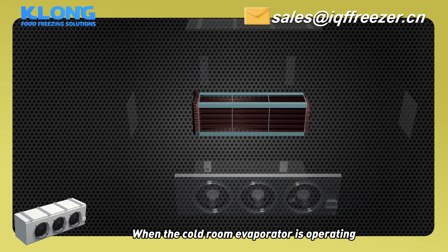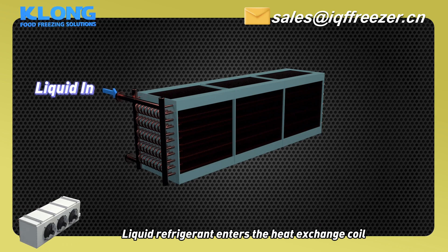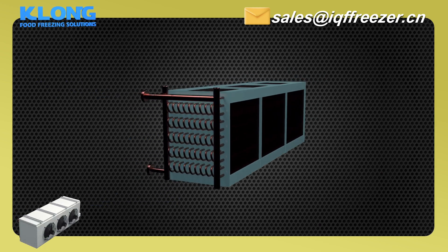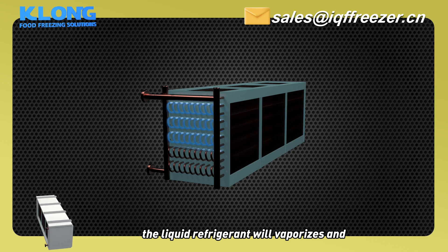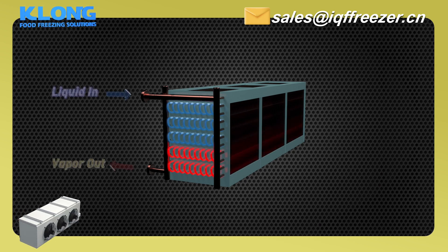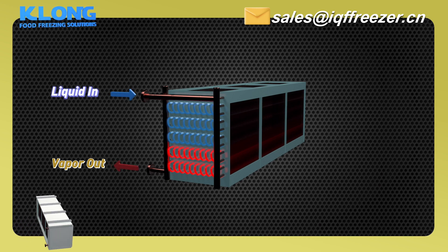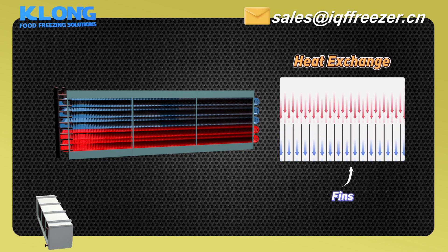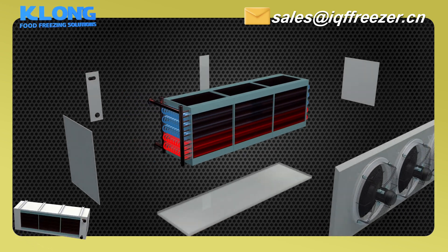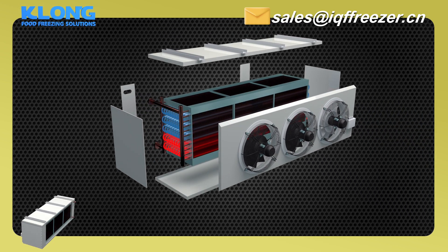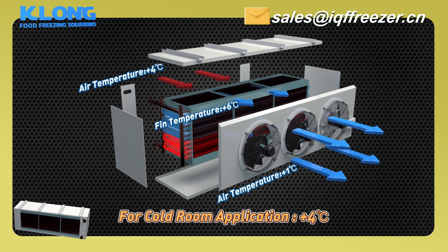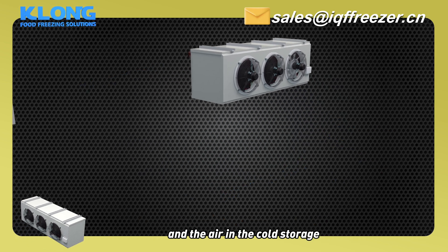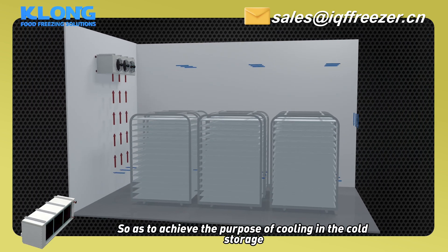When the cold room evaporator is operating, liquid refrigerant enters the heat exchange coil through the liquid separator. The liquid refrigerant will vaporize and absorb the heat. The axial fan is responsible for the convection circulation between the fan and the air in the cold storage, so as to achieve the purpose of cooling in the cold storage.